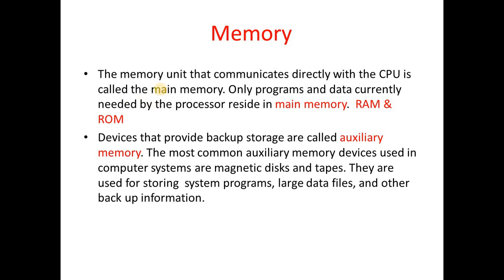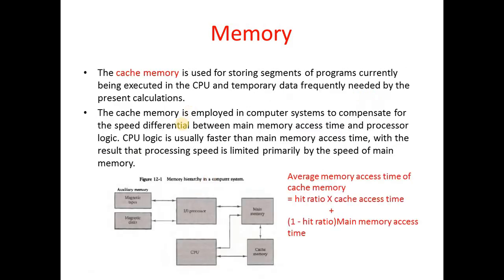The memory unit that communicates directly with the CPU is called main memory — this is basically RAM and ROM. Devices that provide backup storage are called auxiliary memory, such as hard discs and disk drives — those are auxiliary memory.